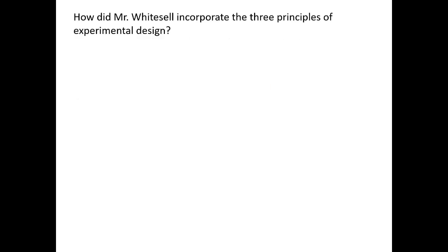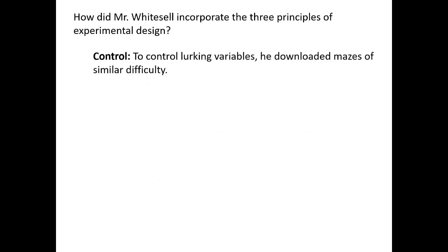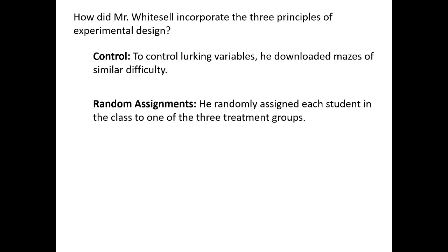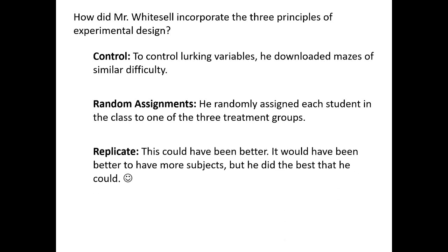When we follow the principles of experimental design, we are trying our best to prevent lurking variables from causing confounding. So how do we incorporate those principles? We controlled for lurking variables by trying to download mazes of similar difficulty. We also randomly assigned students into one of the three treatment groups, so that people with better spatial reasoning would hopefully be split evenly amongst the three groups. In this case, our sample size isn't quite ideal — it would have been nice to have more subjects.